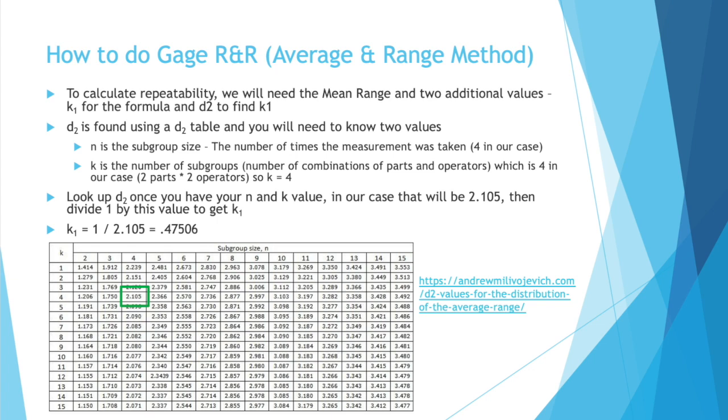And then you also need to know k, the number of subgroups. In this case, the number of combinations of parts and operator, which is four in our case. Two parts times two operators, four total combinations. So k equals four. Then in the table, you find the cell that corresponds to your subgroup size of n, which is four, and your k, the number of subgroups, which is also four. And in the table on the bottom of the screen, four and four, that cell is 2.105.